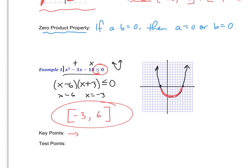Hopefully you're starting to figure this out. We are looking for zeros or x-intercepts. That's what we're looking for because that determines when our graph changes from positive — above the x-axis, or greater than 0 — to negative, and vice versa. When we get to testing points, we're going to do that on a number line.